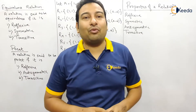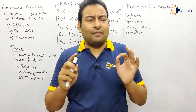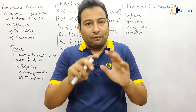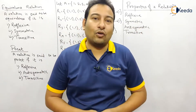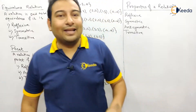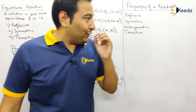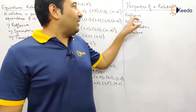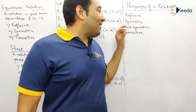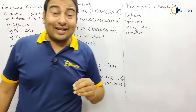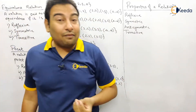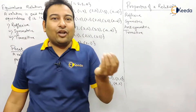Before watching this video, make sure you watch the previous video because in that video we covered the entire concept of the different properties. There are four properties: reflexive, symmetric, anti-symmetric, and transitive.